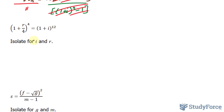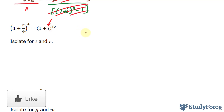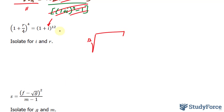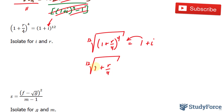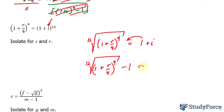Here they want us to isolate for i and r. Let's start with i. i is right there and it's in parentheses raised to the power of 12. I can get rid of the power of 12 by taking the 12th root of both sides. The 12th root of the left side — bracket 1 plus r over 4 raised to the power of 4 — is equal to the 12th root of the right side, which gets rid of the 12th power, leaving only 1 plus i, the base of the power. The exponent 12 is gone, and to get i, I'll take this 1 to the left side. So I have the 12th root of 1 plus r over 4 to the power of 4, minus 1, is equal to i.